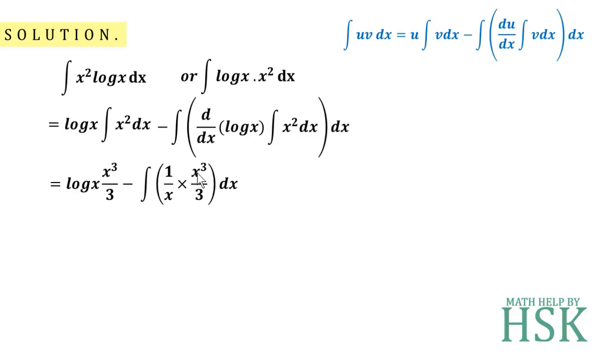Now this x and this x cubed simplify to give me x squared over 3, and I can write this expression as 1/3 times x cubed times log x minus the integration of 1/3 x squared with respect to x.